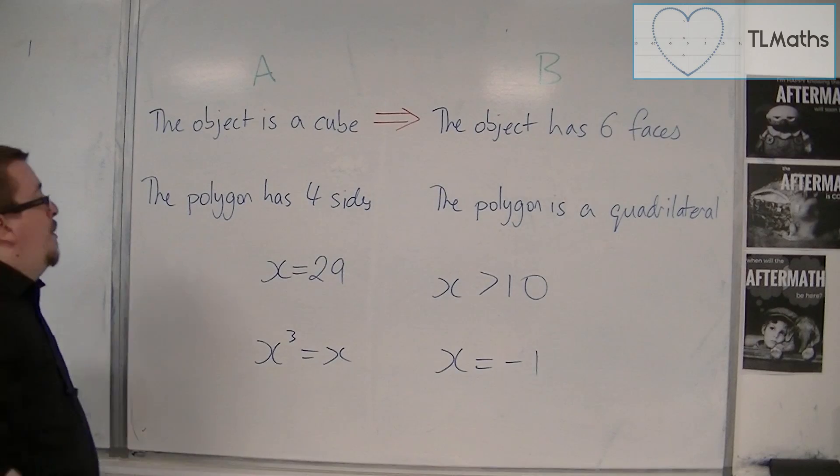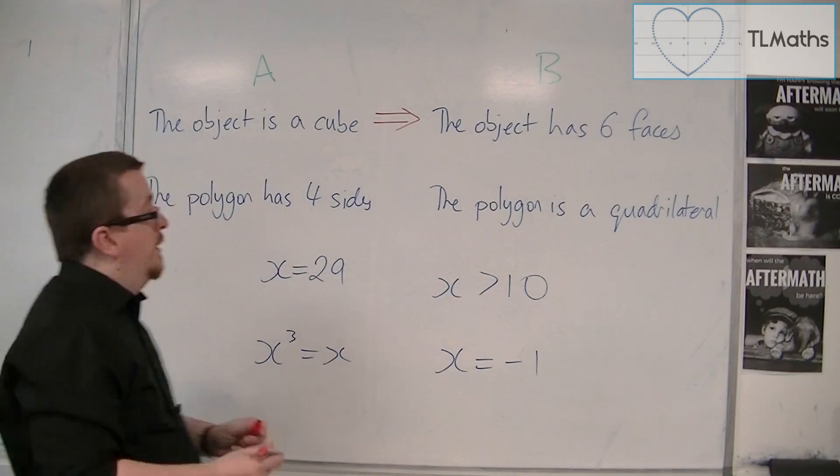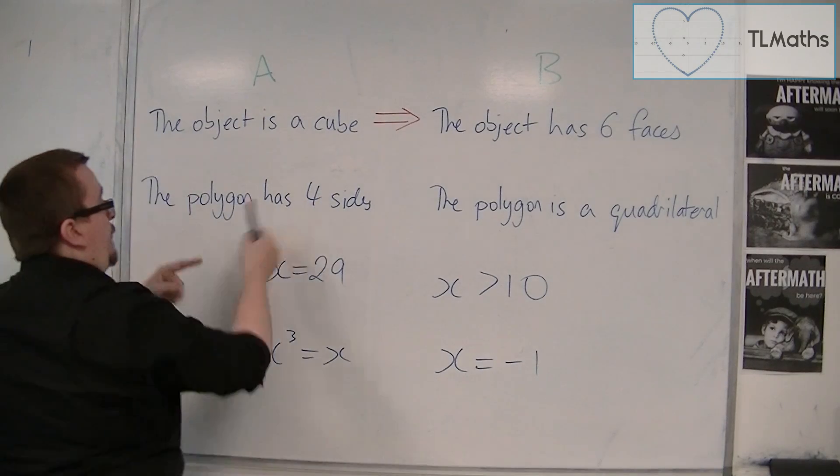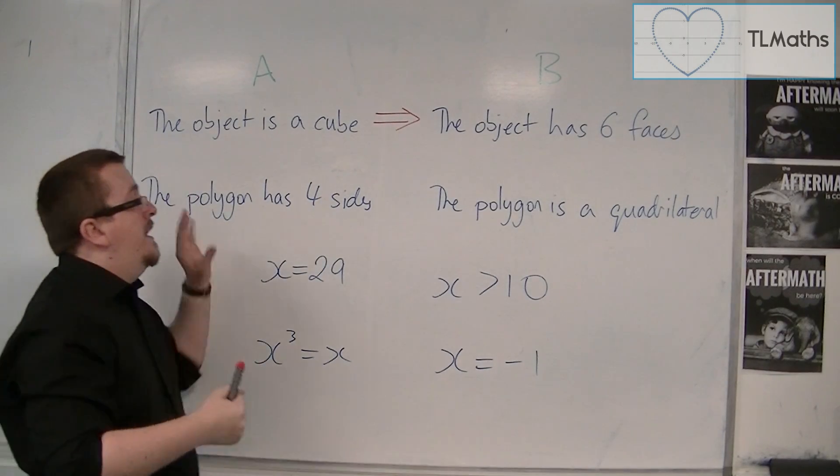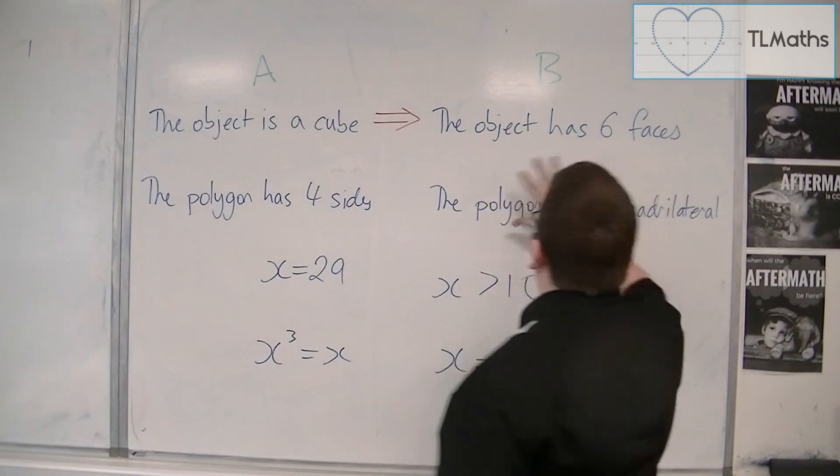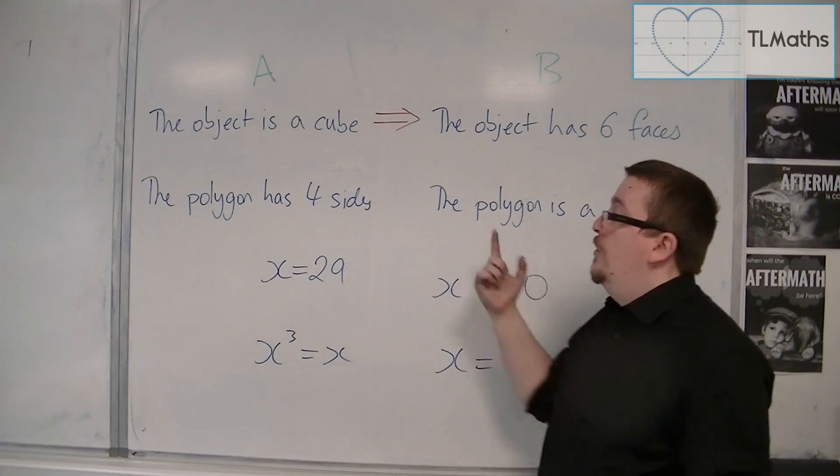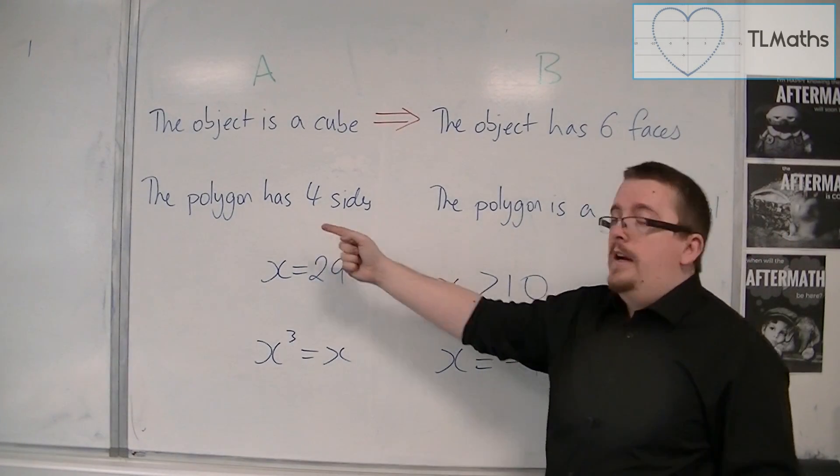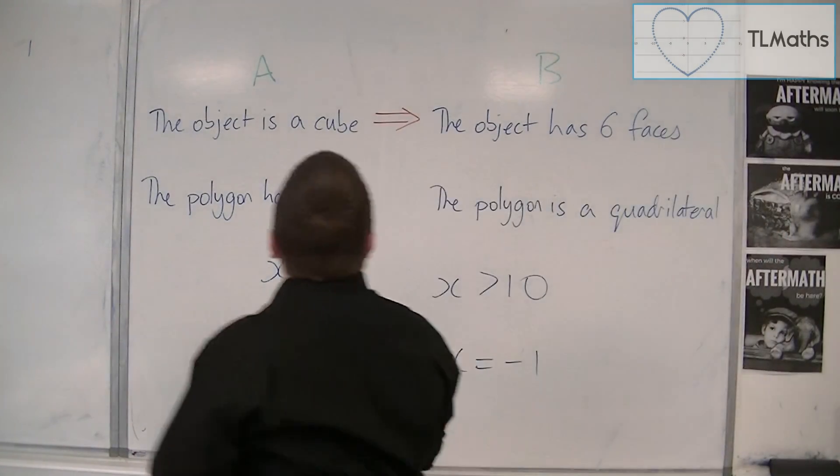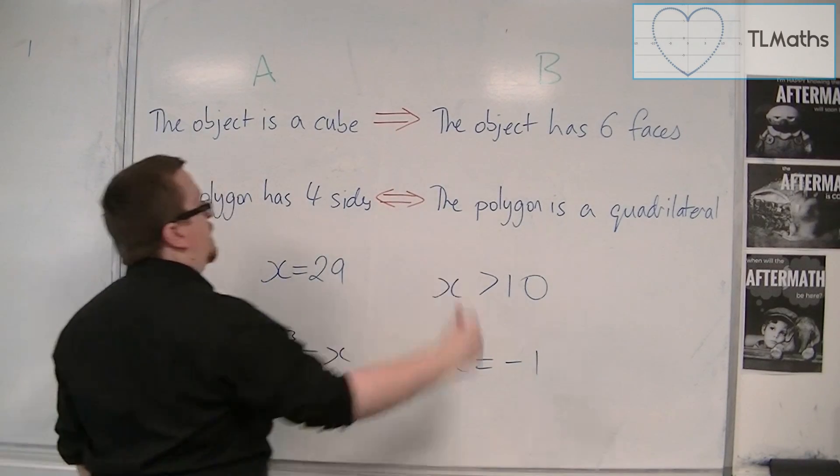The second one, the polygon has four sides. The polygon is a quadrilateral. Well, if a polygon has four sides, then we would call it a quadrilateral. And if we are told that the polygon is a quadrilateral, then I immediately know that it has four sides. And so I draw the arrow going both ways. This is if and only if.